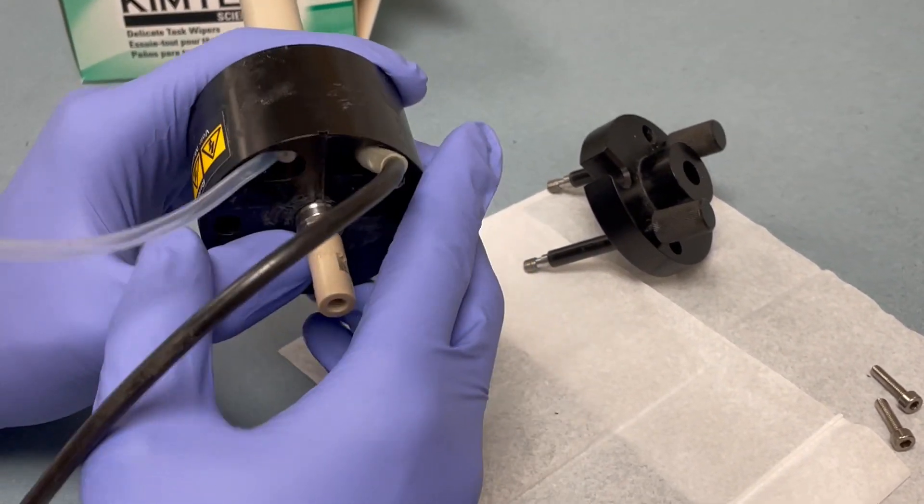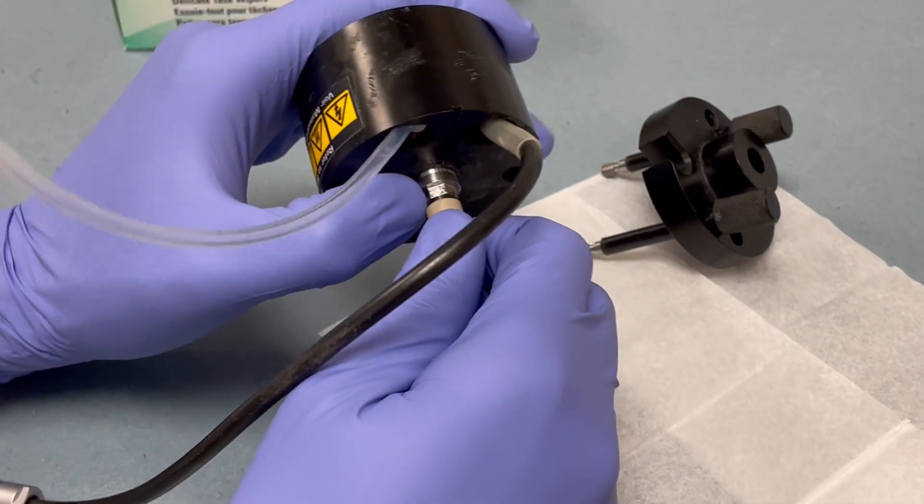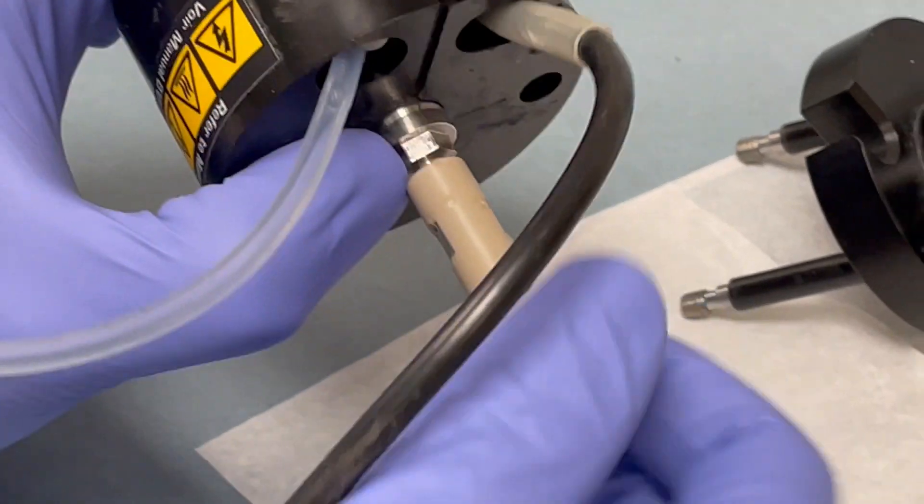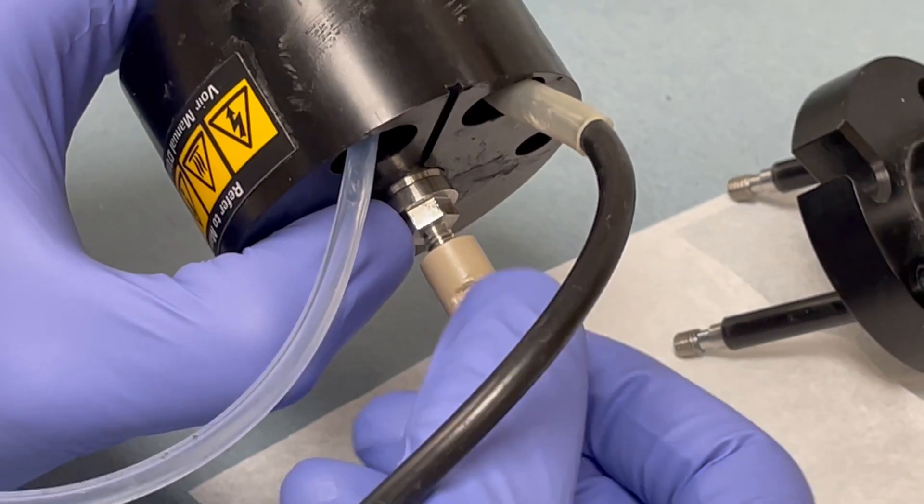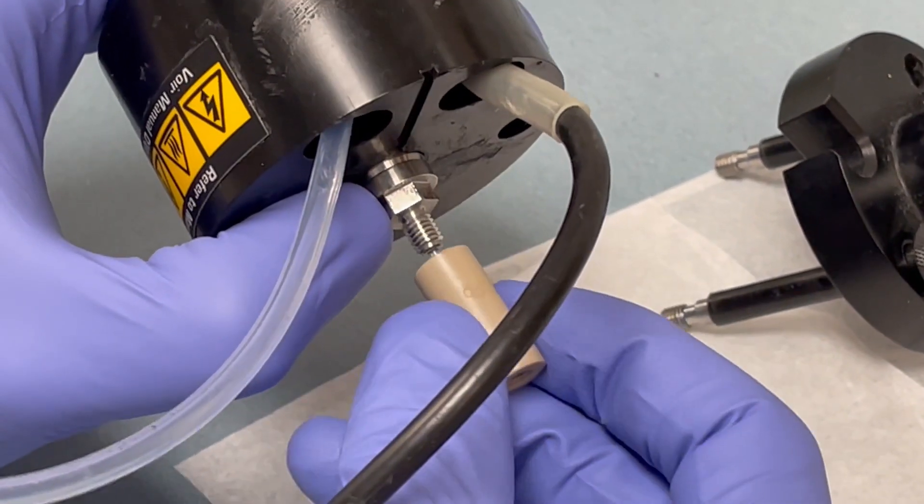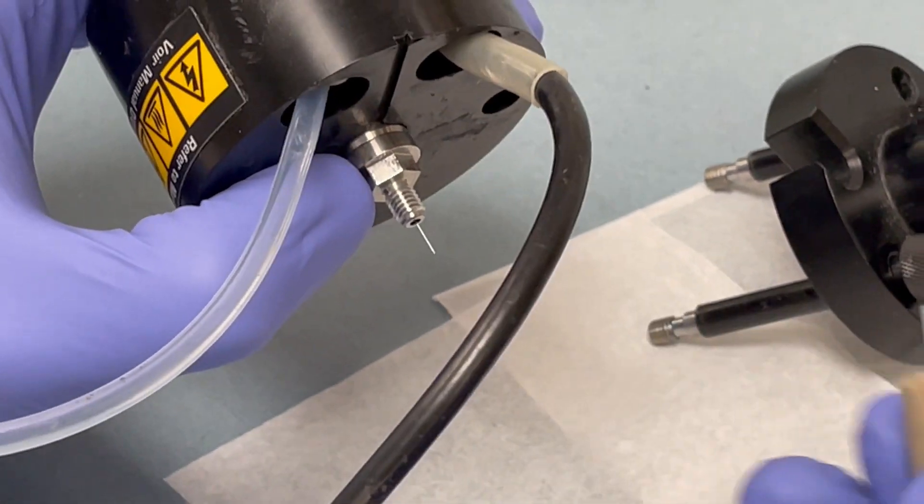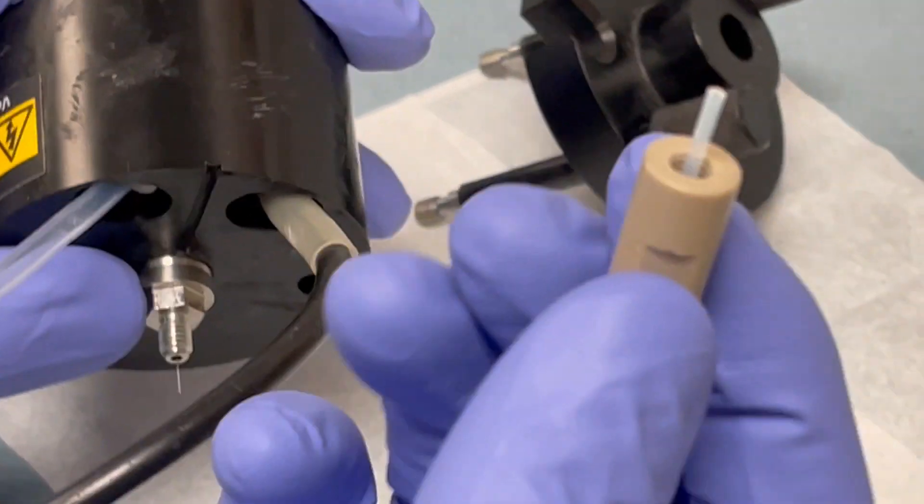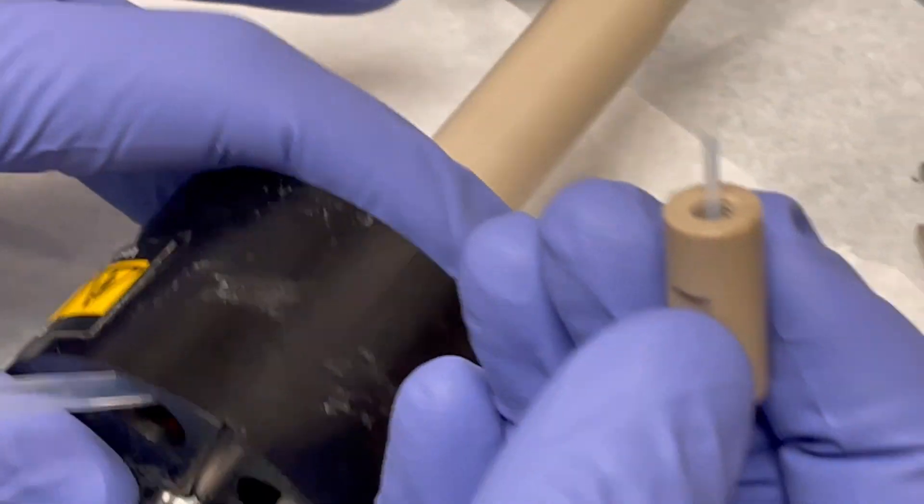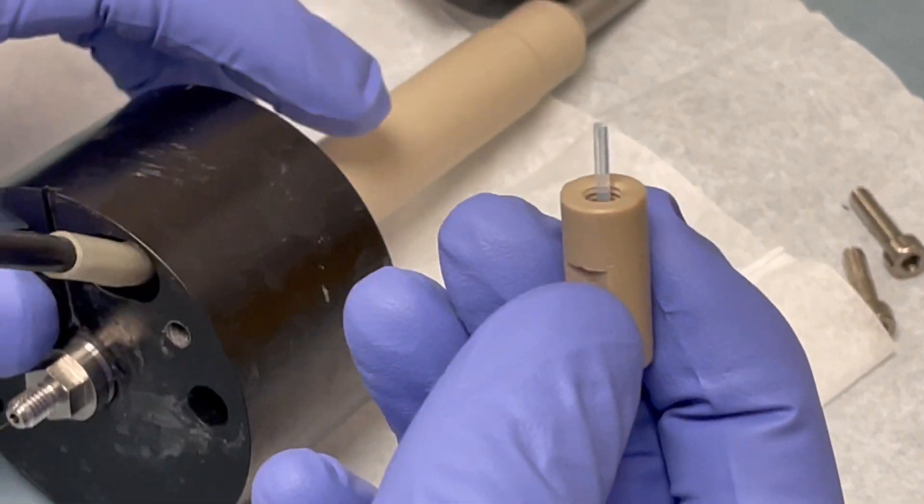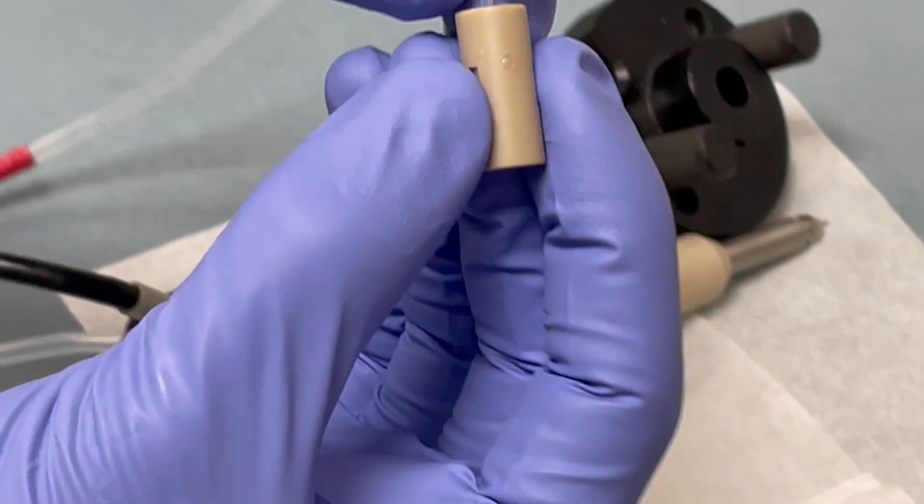Next thing to do is to unscrew the union from the top of the source. And here a little plastic tube that has come with it. So before we go any farther we're going to separate those.